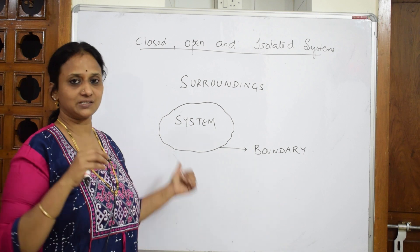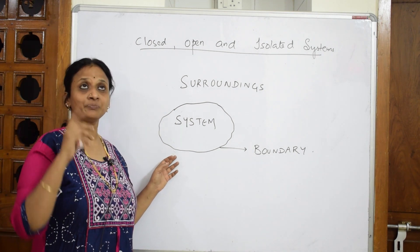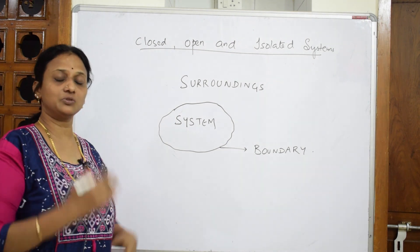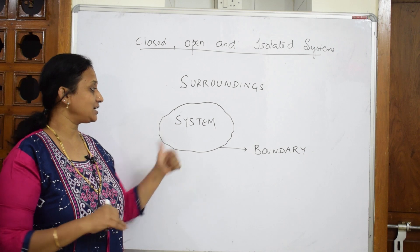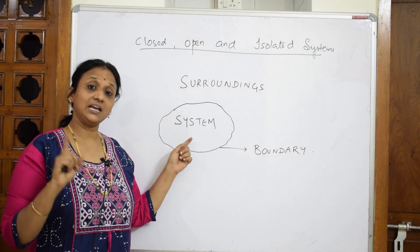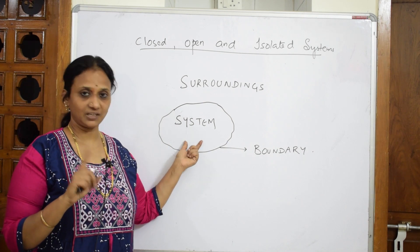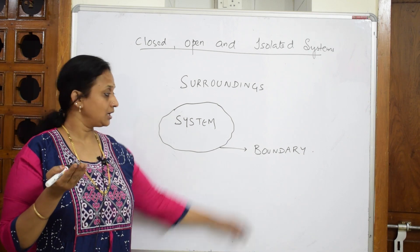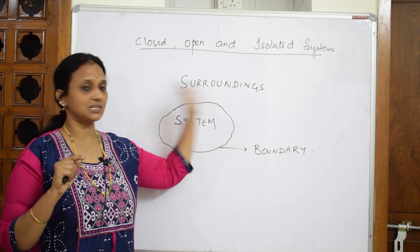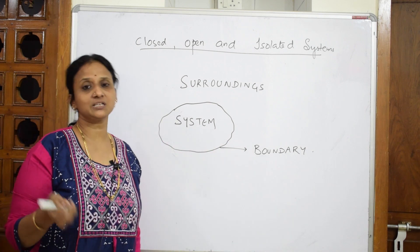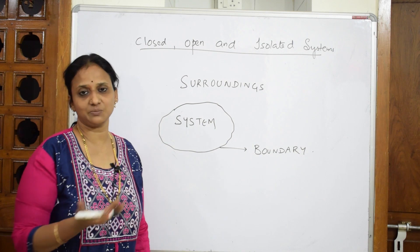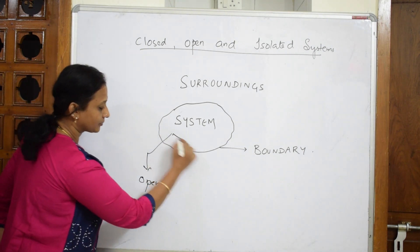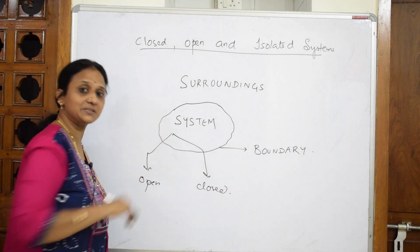The matter inside the test tube is the system; the test tube itself separating the surroundings is the boundary. Importantly, the boundary can be movable in some cases, like a moving piston. To summarize: system is the matter or area under study, surroundings is the area outside the system, and boundary is the imaginary line separating them. Based on these concepts, the system can be divided into open and closed systems.